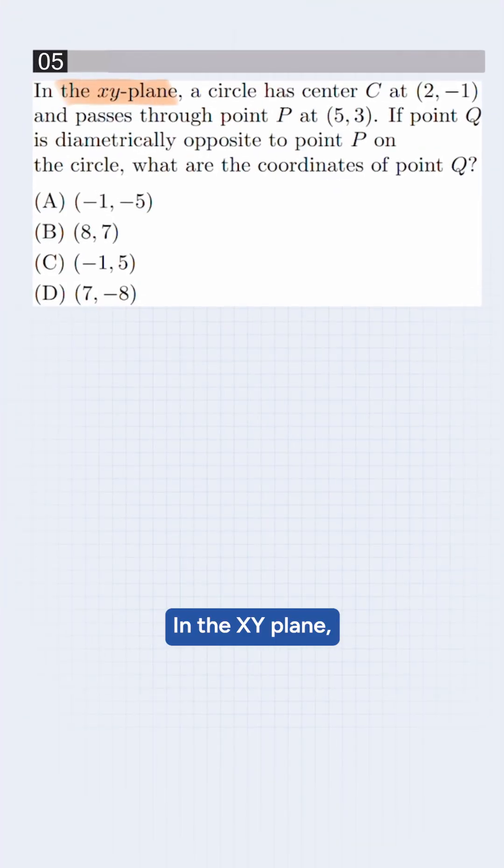The question says in the xy plane a circle has center C at 2 comma minus 1 and passes through point B at 5 comma 3. If point Q is diametrically opposite to point B on the circle, what are the coordinates of point Q?